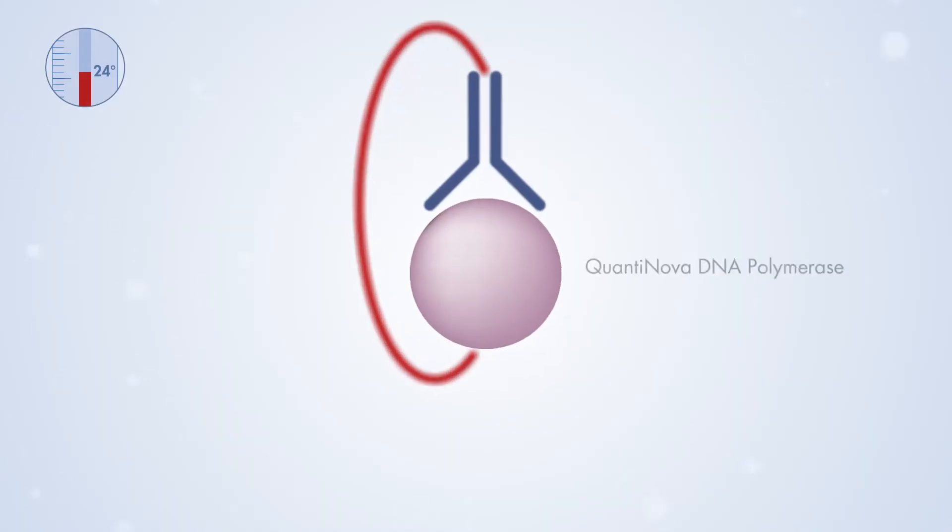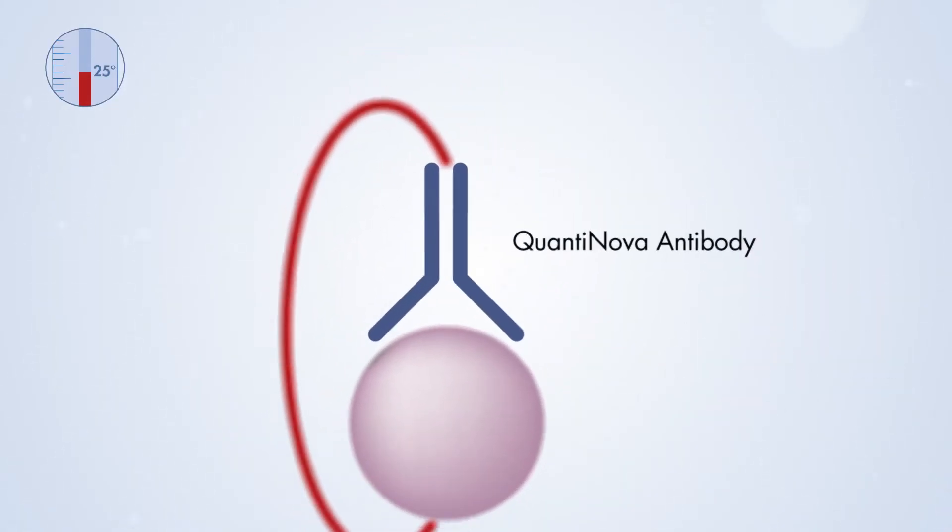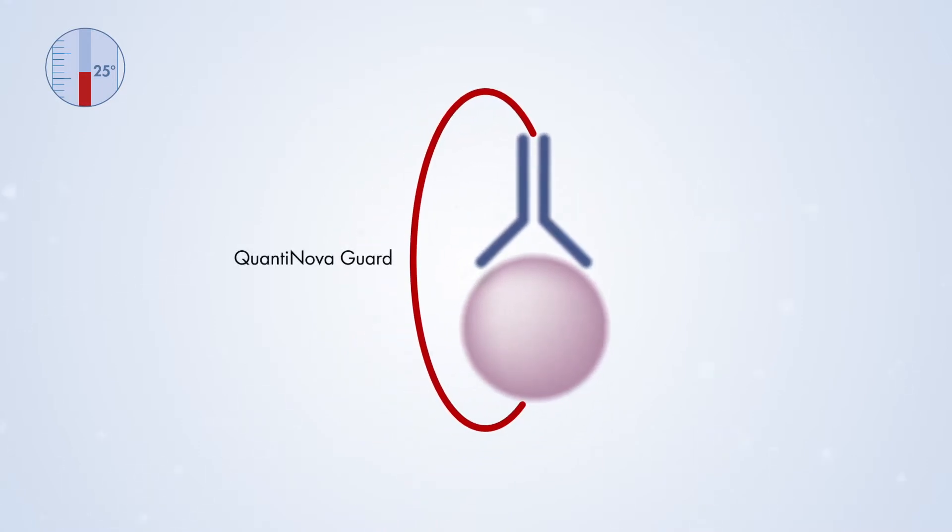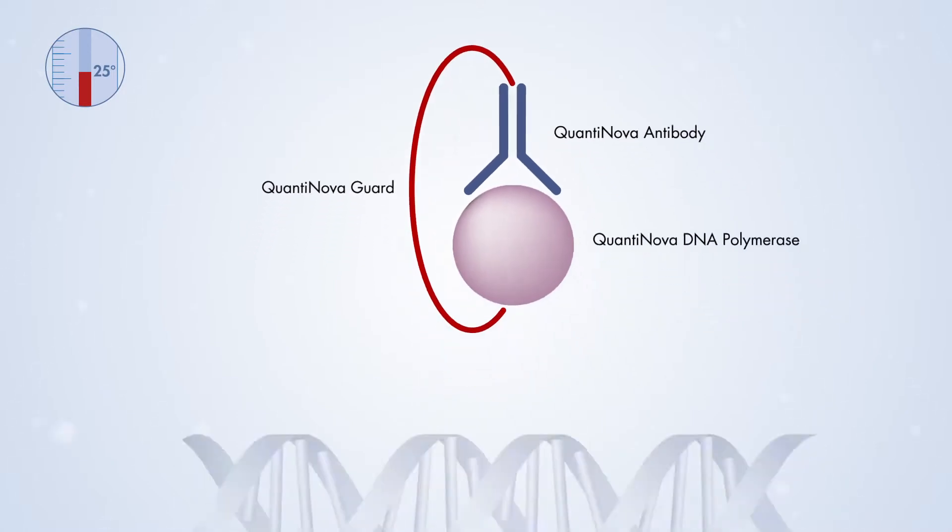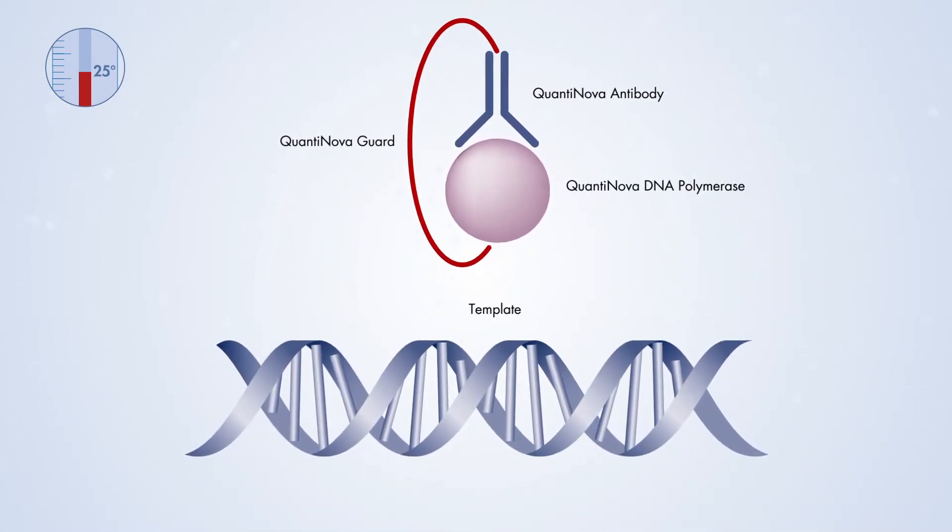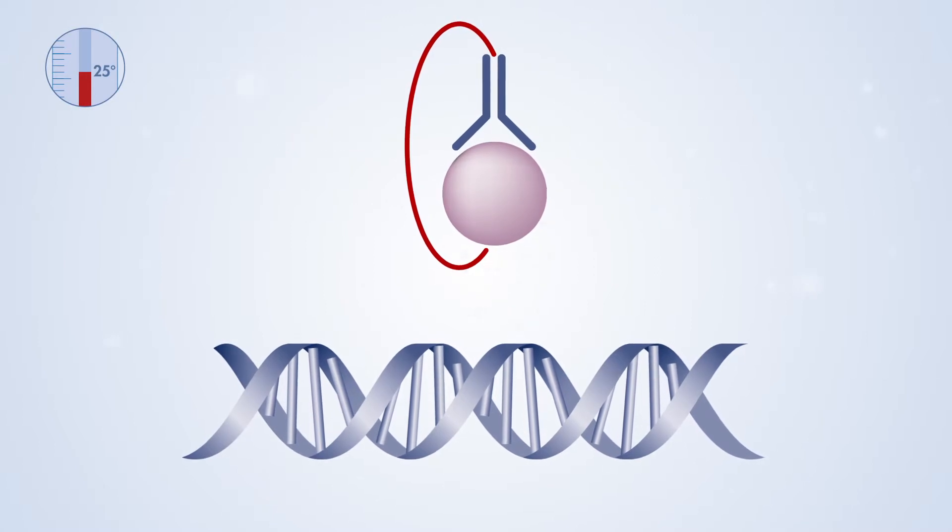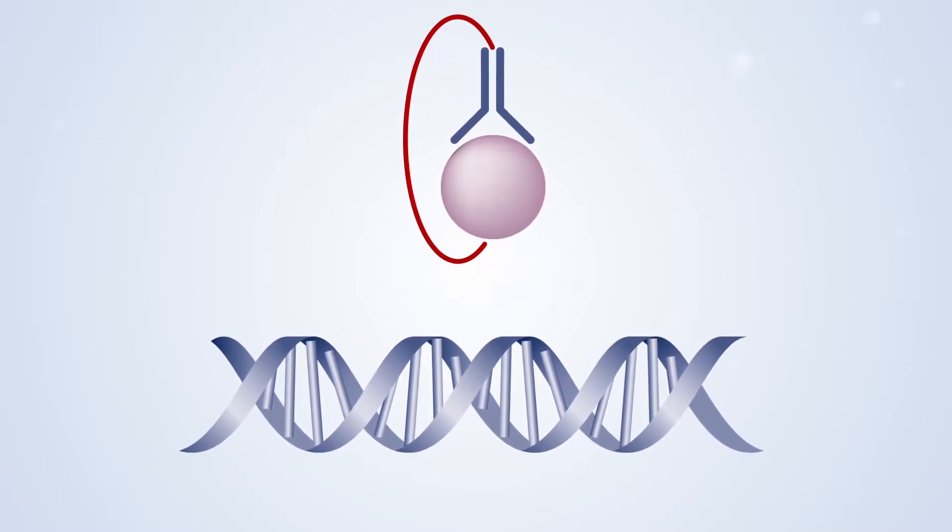At room temperature, the QuantiNova DNA polymerase is kept inactive by the QuantiNova antibody, and the QuantiNova guard stabilizes the complex. Together, these two components enhance the stringency of the antibody-mediated hot start and stop any residual polymerase activity. This prevents the extension of non-specifically annealed primers and the formation of primer dimers.